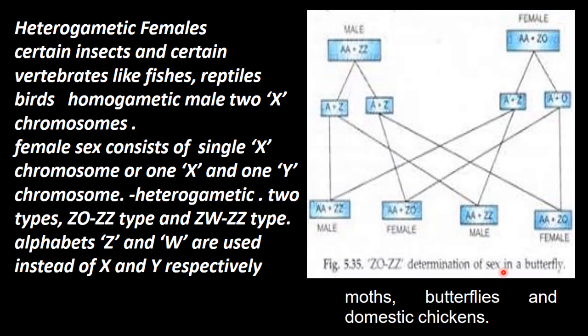This determines sex in butterflies, moths, and domestic chickens. Males are homogametic Z and Z. Females are heterogametic Z and O. Males produce one type of sperm carrying Z chromosome alone, whereas females produce Z chromosome ovum and ovum with no sex-determining chromosome. Whichever offspring has single Z chromosome becomes female, whereas double Z chromosomes become male.